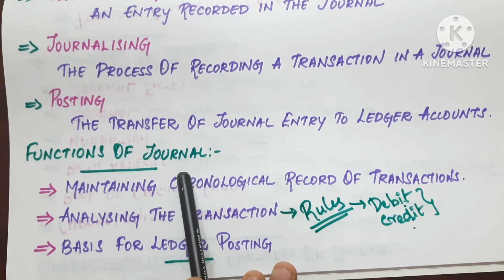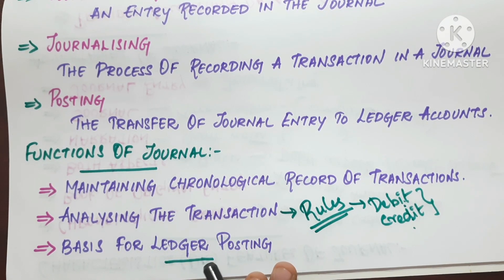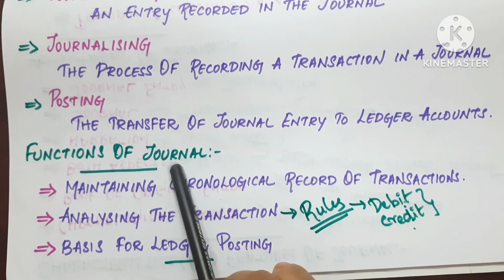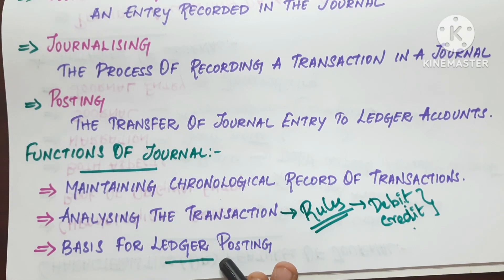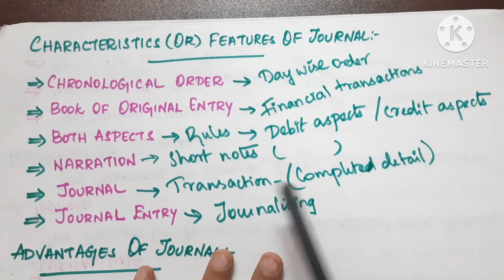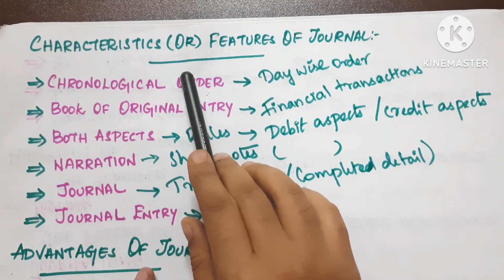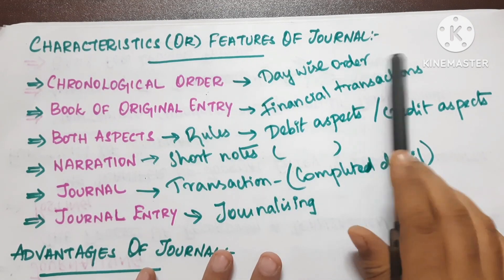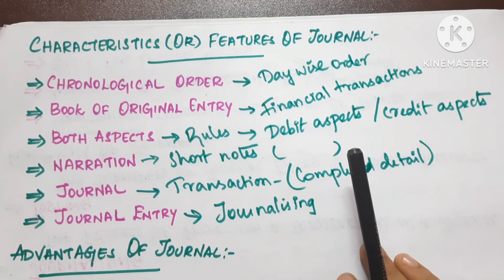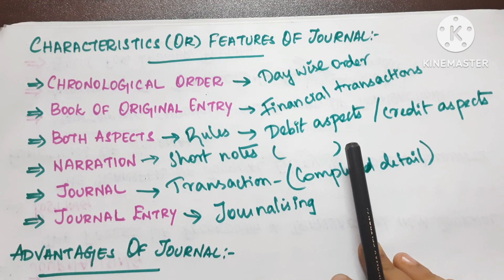Once we complete the journal, we can post to the ledger. If there is a mistake in the journal, it will be reflected in the ledger as well.